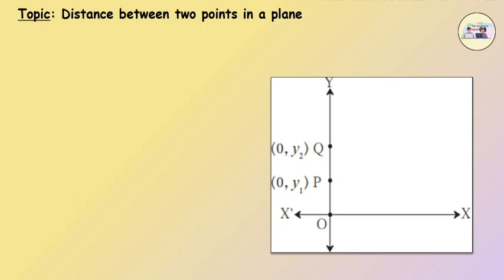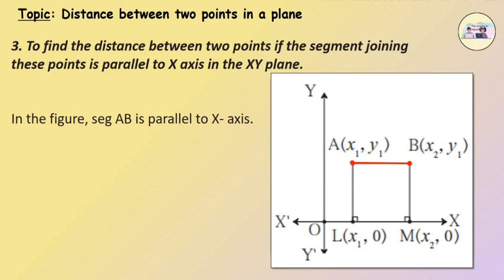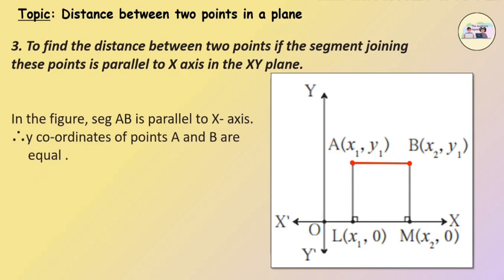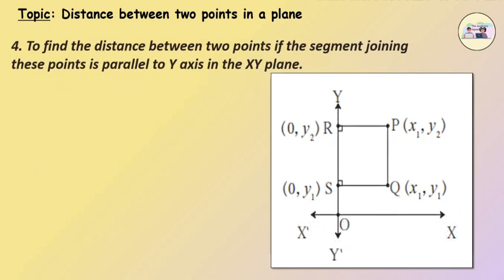To find the distance between two points if the segment joining these two points is parallel to the x-axis in the xy plane: in the figure, segment AB is parallel to the x-axis. Therefore, the y-coordinates of points A and B are equal. Therefore, the distance of AB is equal to x2 minus x1.